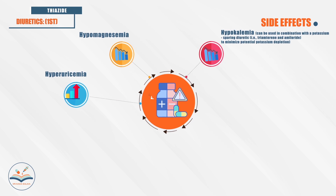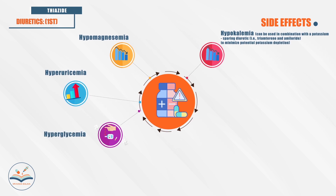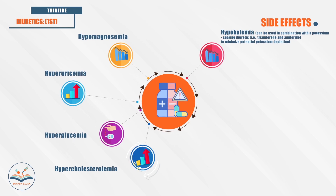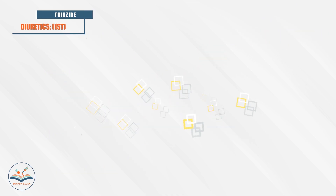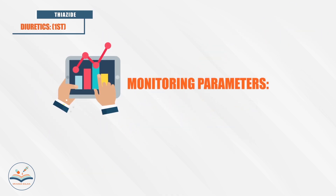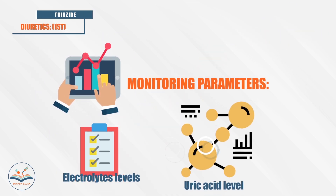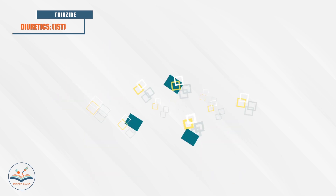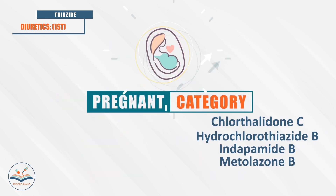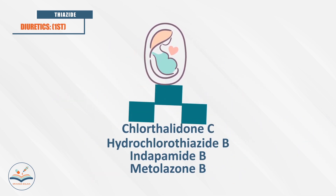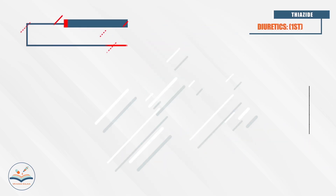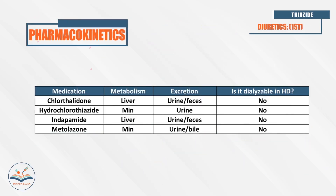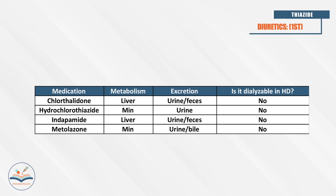Additional side effects of thiazide diuretics include hypomagnesemia, hyperuricemia, hyperglycemia, hypercholesterolemia, and sexual dysfunction. We have to monitor electrolytes and uric acid levels. Chlorthalidone is category C during pregnancy and the rest are category B. Most are metabolized by the liver and excreted by urine, and they are not dialyzable.